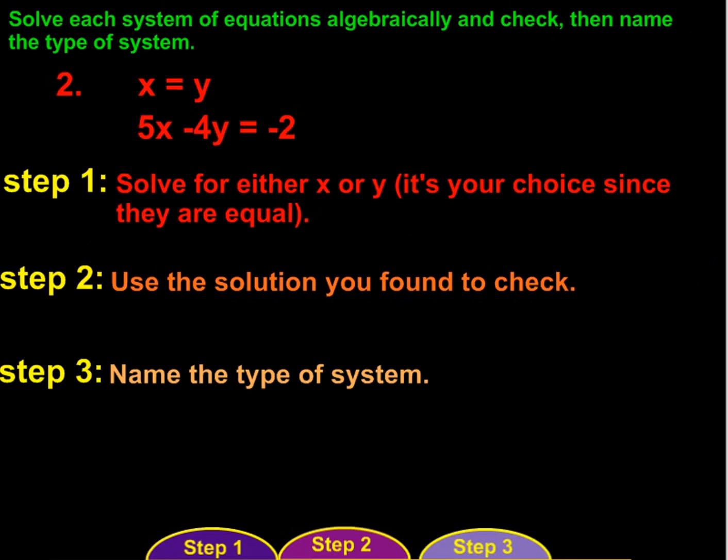We'll start by taking a look at question number 2. Solve each system of equations algebraically and check, then name the type of system. For question number 2, we have x equals y and we have 5x minus 4y equals negative 2.